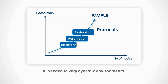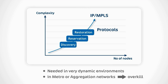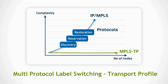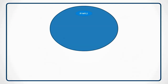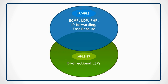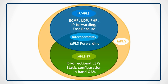These protocols are needed in very dynamic environments, but in the relatively static environment of a metro or aggregation network, they are overkill. To reduce complexity while still offering the benefits of an IP MPLS network, the industry, together with the IETF and ITU, has developed a new standard called MPLS-TP, or Multi-Protocol Label Switching Transport Profile. This evolution of the MPLS standards adds extra features not previously found in MPLS, like bidirectional paths, management-system-based operation, and in-band monitoring features. It also guarantees interworking with existing MPLS equipment, using the same MPLS forwarding and pseudo-wire infrastructure already available on the market.